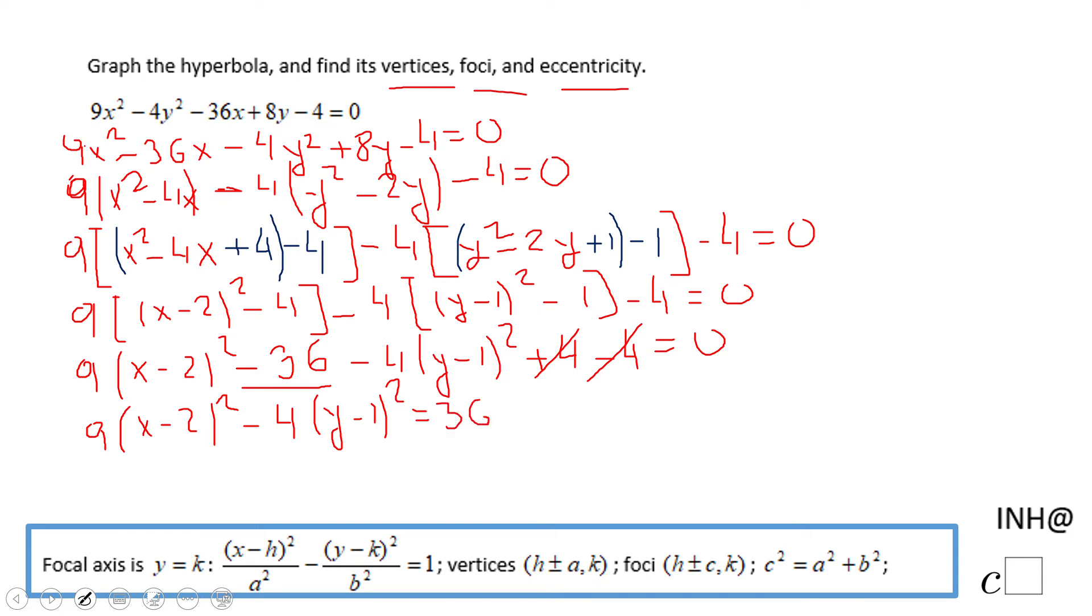And we're going to divide by 36, and we're going to get something that is going to be very similar to this form. That will be (x - 2)² over, and now this 9 goes into this 36, 4 times, minus (y - 1)².